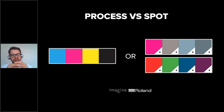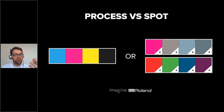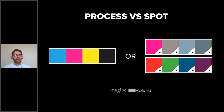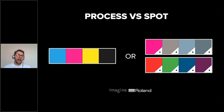Another core concept is the difference between process and spot colors. Process colors are made up from cyan, magenta, yellow, and black — you can create up to a million different colors with CMYK, primarily through the cyan, magenta, and yellow. Old-school printing presses creating newspapers or magazines would mix those three to create content and pictures. If Coca-Cola came along wanting you to print their specific red, you'd have to mix up an additional color and print that in specifically — and that's the origin of spot colors.